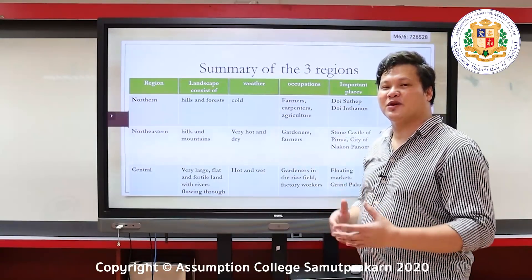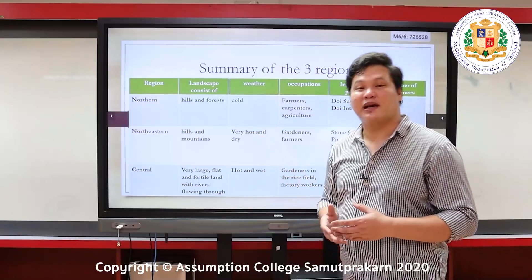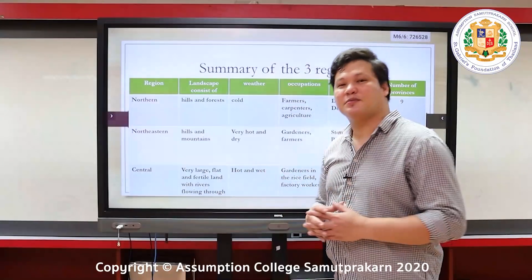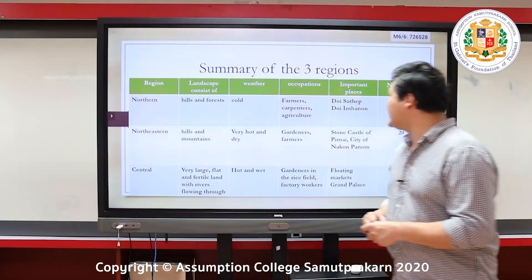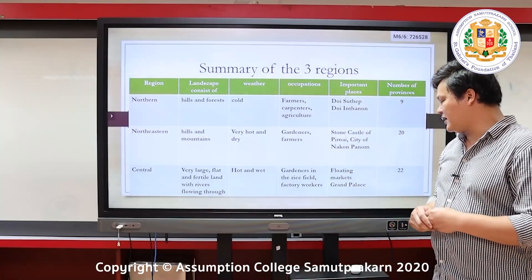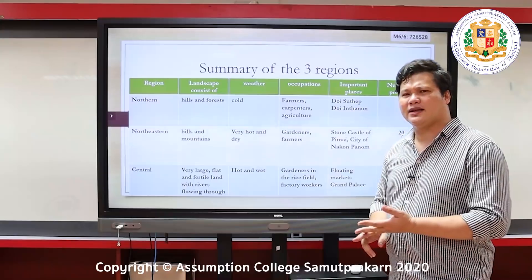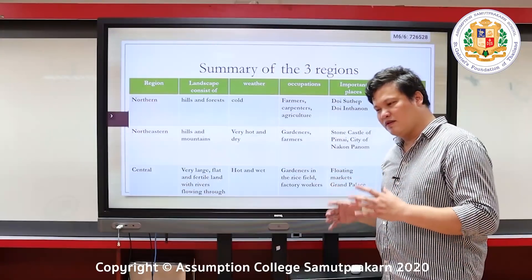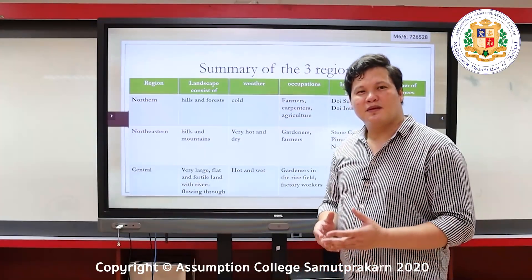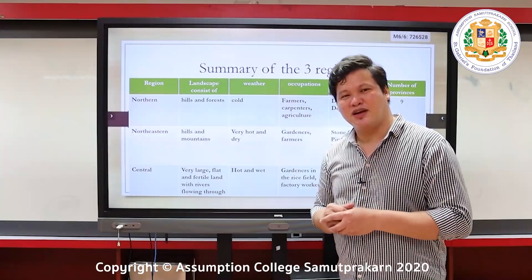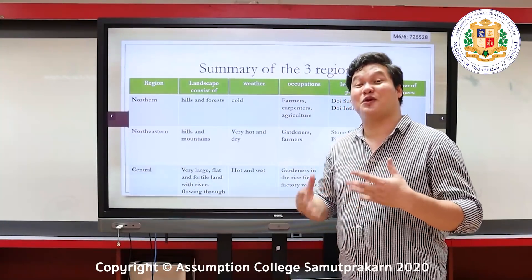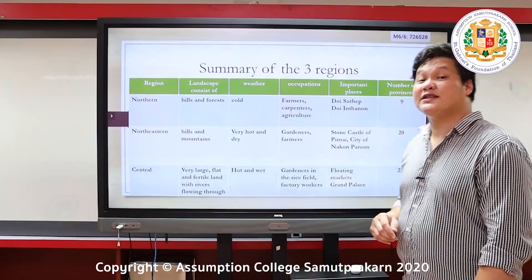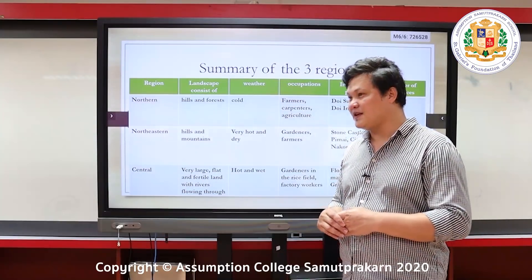Central region: landscape is very large, flat, and fertile land — fertile because main rivers flow through this region. Weather is hot and wet. People are gardeners working in rice fields and factory workers. Important places are floating markets and the Grand Palace. There are 22 provinces. All together: 77 provinces.